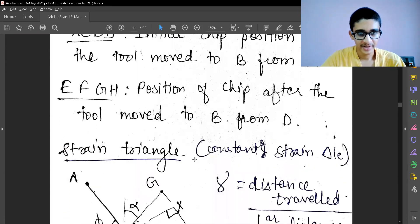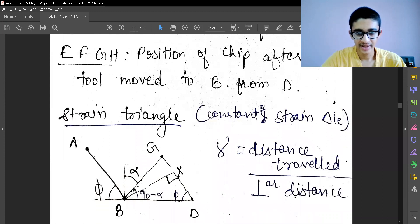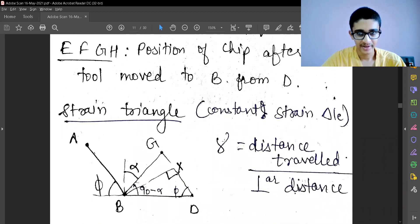The strain triangle is shown. The constant strain triangle is this. Strain is defined as distance traveled divided by the perpendicular distance. This is what I got earlier. I have just transported the triangle.